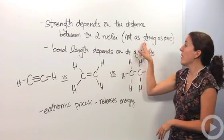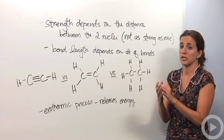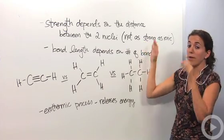However, I want you to note that they're not as strong as ionic bonds. Ionic bonds have a very strong bond and connection to each other. So those are the strongest type of bond we can have. Covalent bonds are not as strong as those.